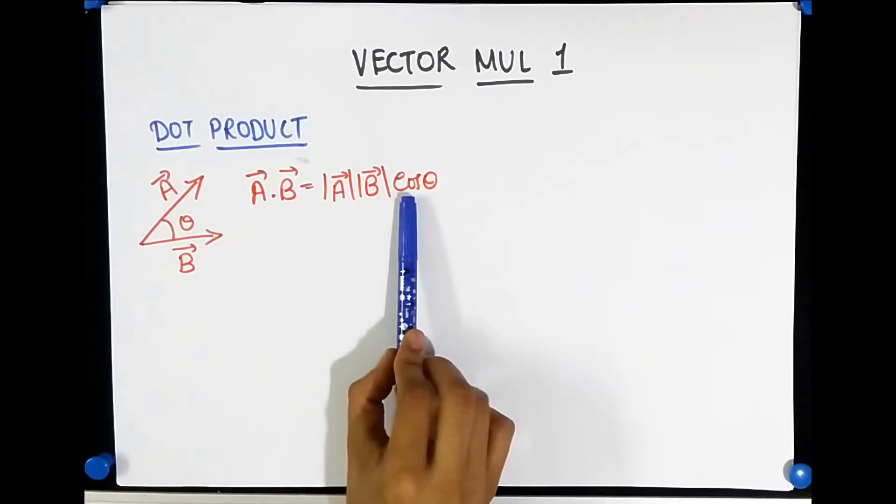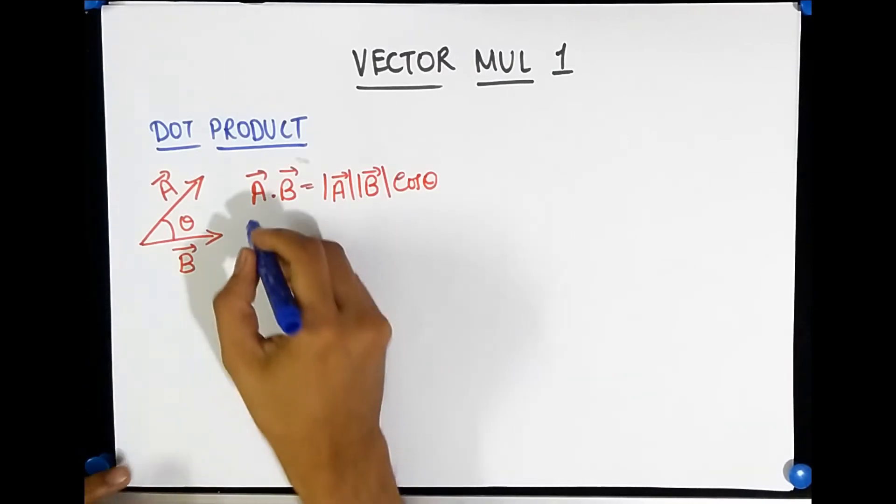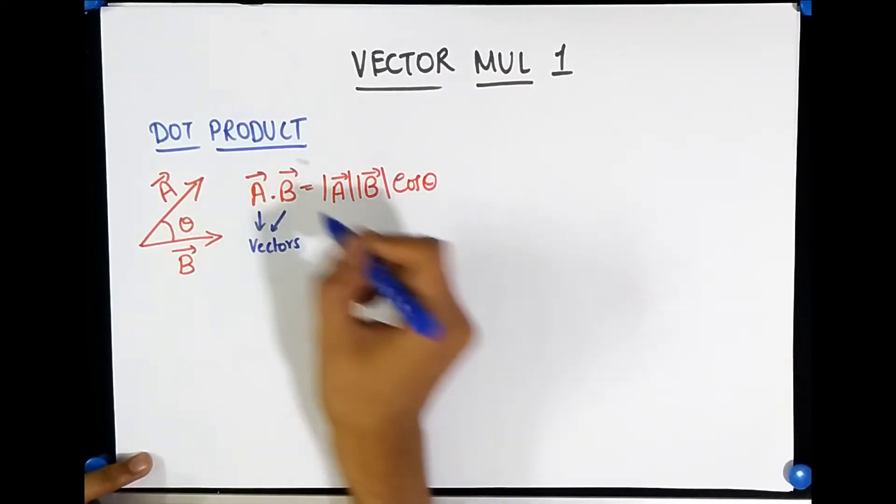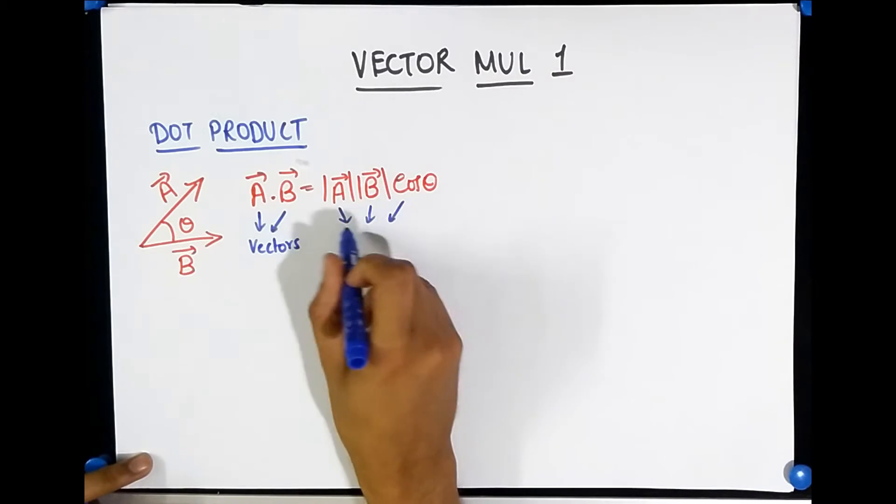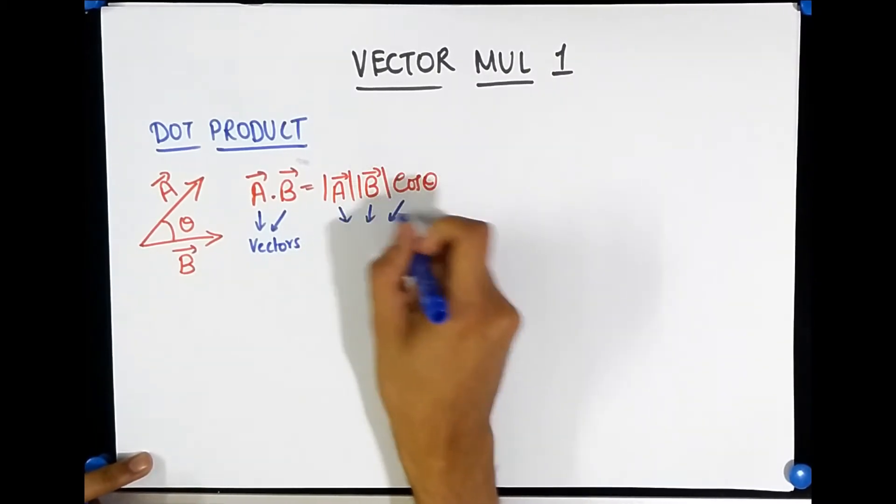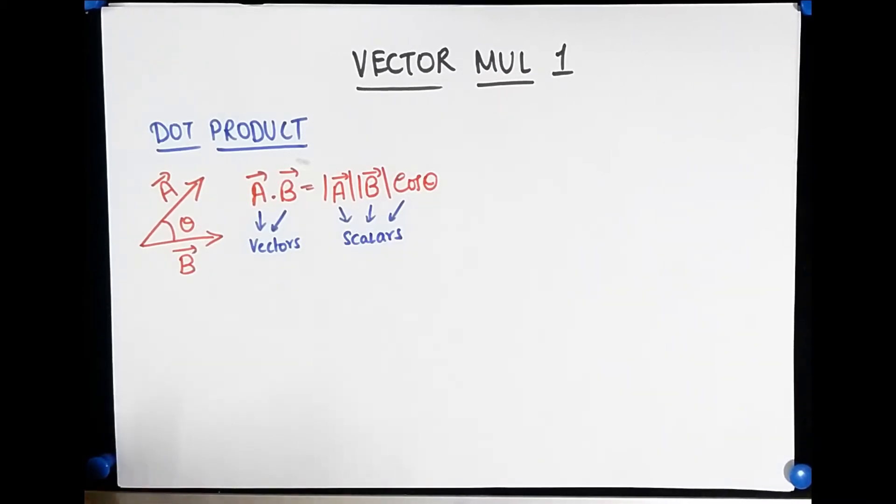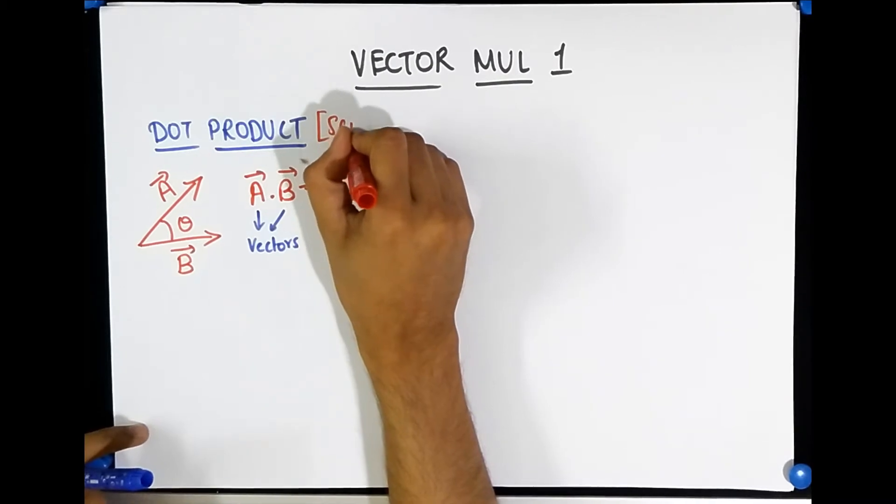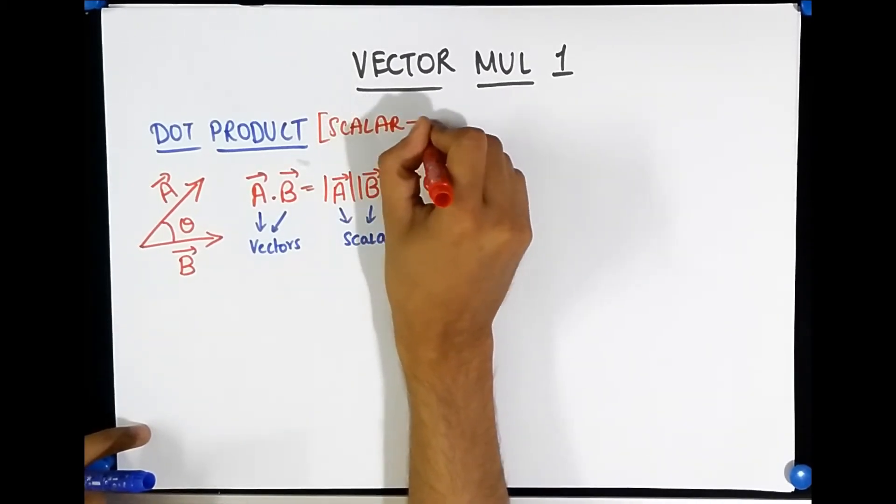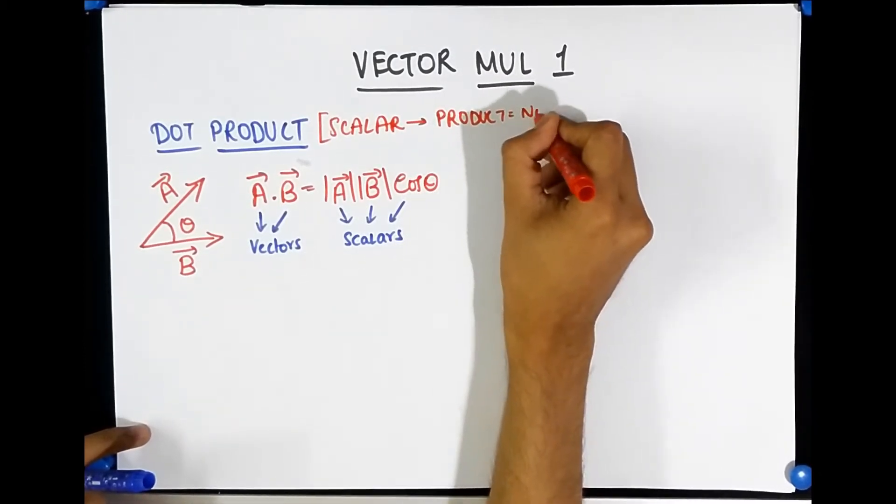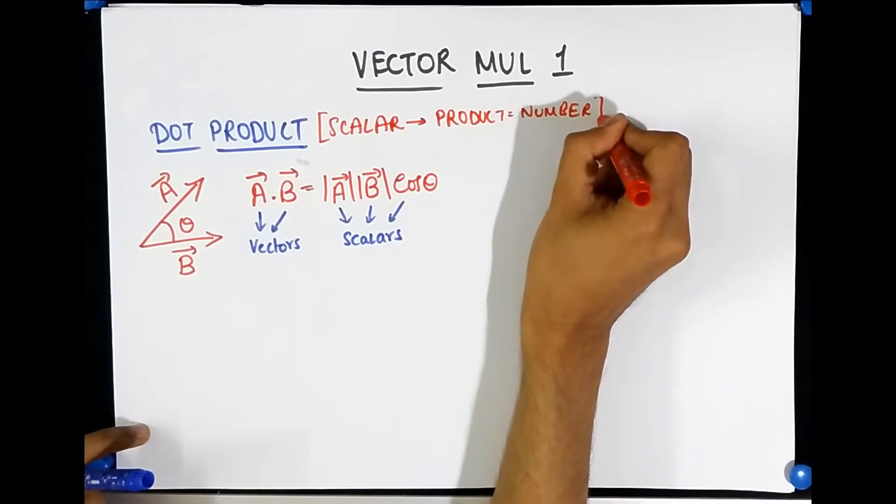Now, if you notice this carefully, you will see that on the left-hand side you have vectors. These guys are vectors because they have a little arrowhead on them. But look at these guys, these guys are just numbers because we've taken magnitudes and cos is just a ratio, so these are scalars. Therefore, dot product is also called scalar product, and the reason for that is because the product is a number. So product equals just a number. That means two vectors can be multiplied to give you a scalar. That's possible.